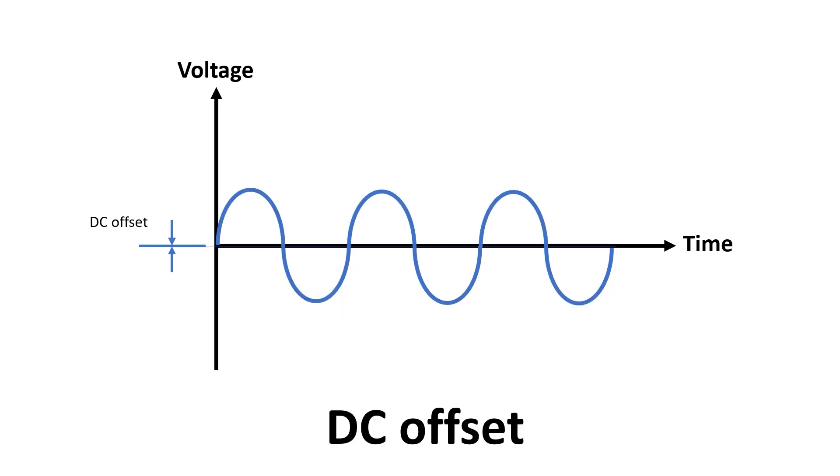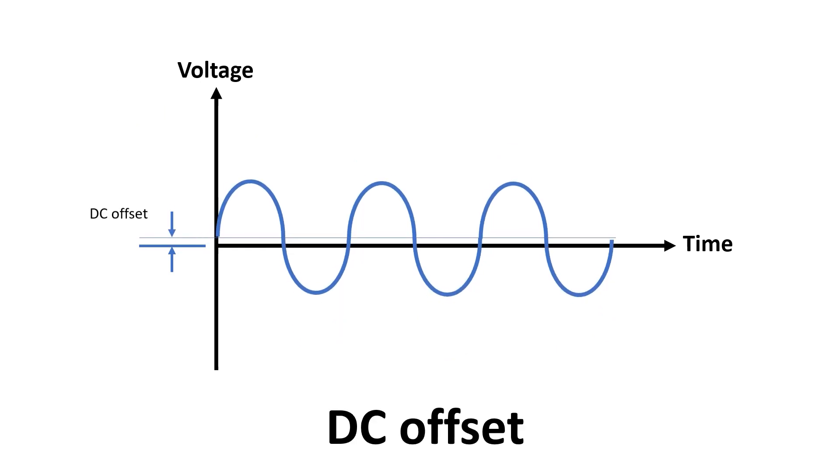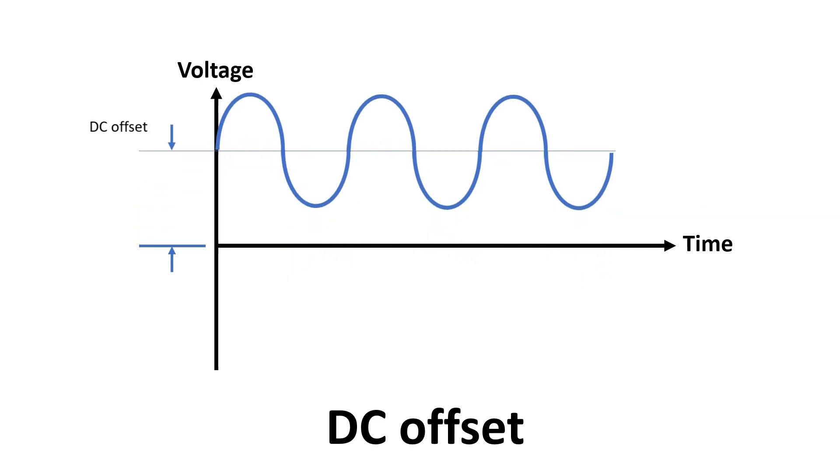The next property is the DC offset. And this is the difference between zero volts and the sine wave's average voltage.